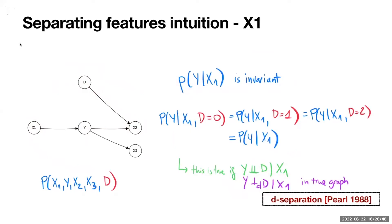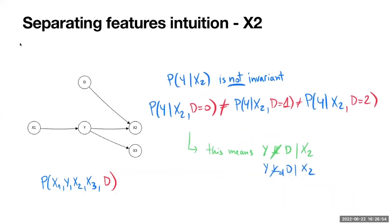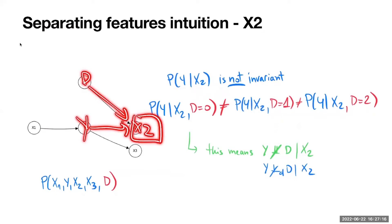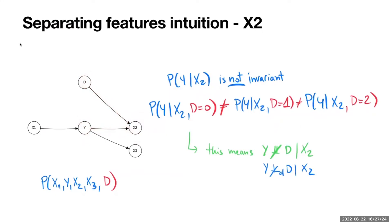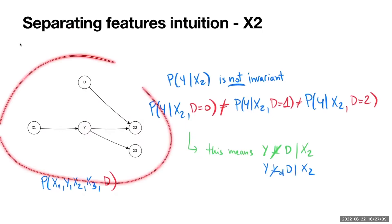P(Y|X2) is not invariant because conditioning on X2 opens the path from Y to D through that collider. This tells us X2 is not a good predictor — it will bias predictions across domains. This is called collider bias, and this reasoning all assumes we know the graph.